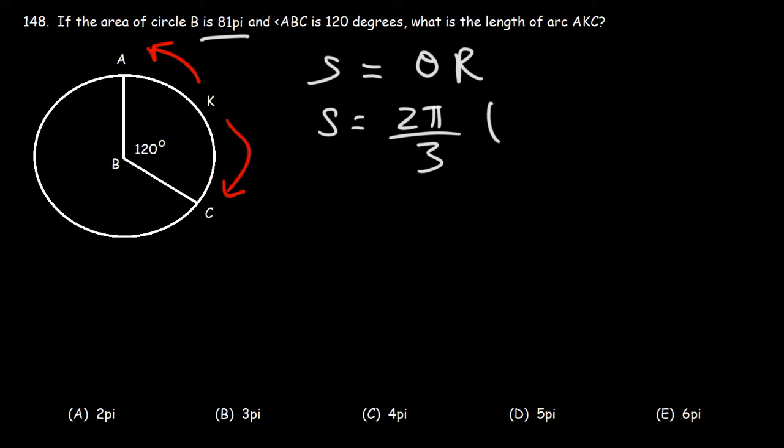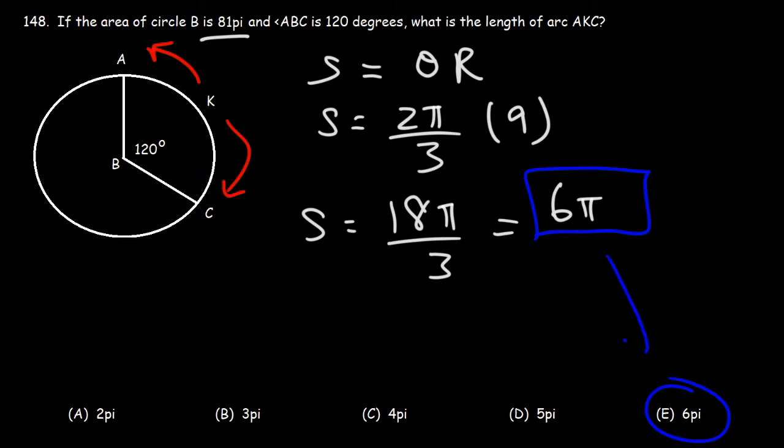So let's replace r with 9. 2 pi times 9 is 18 pi, and 18 pi divided by 3 is 6 pi. So this is the arc length. That's the measure of arc AKC. It's equal to 6 pi, which means E is the correct answer.